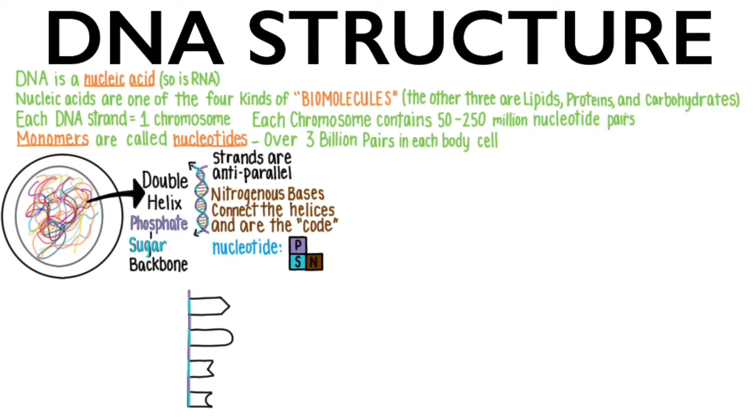The four nitrogenous bases of DNA are adenine and guanine, which are the bigger ones, and they are classified as purines because of their double ring structure. And then there's thymine and cytosine. These two are smaller and they are classified as pyrimidines because they only have one ring.